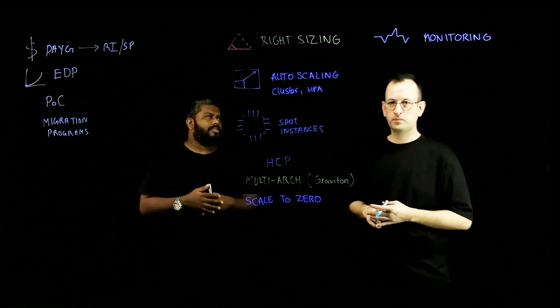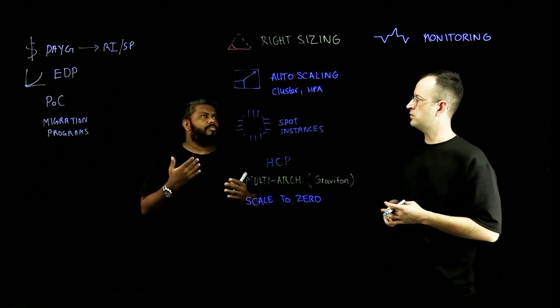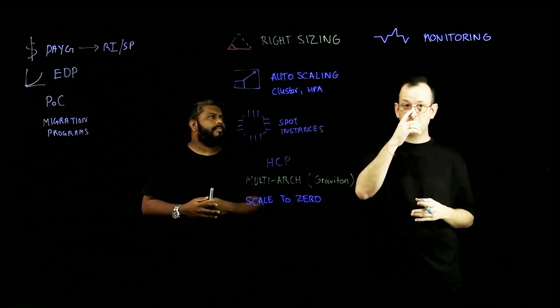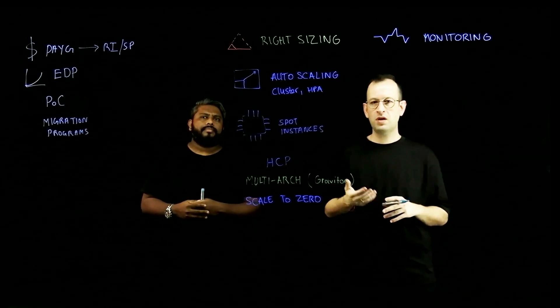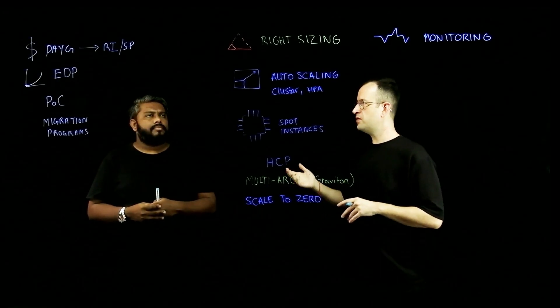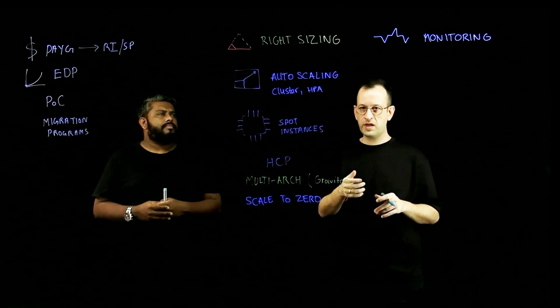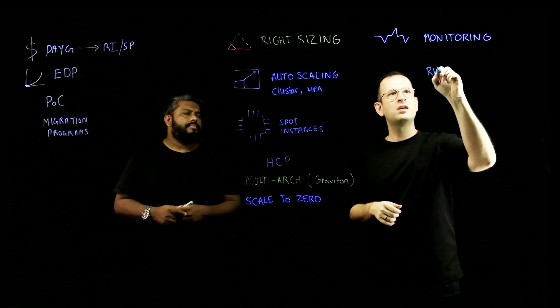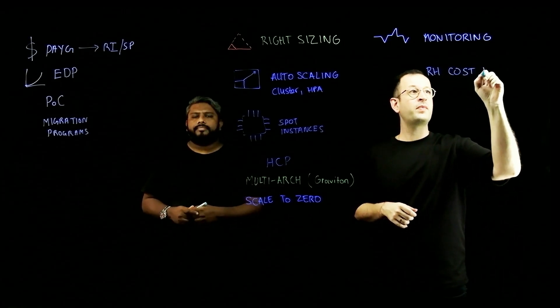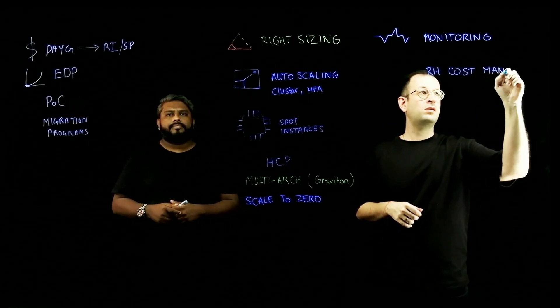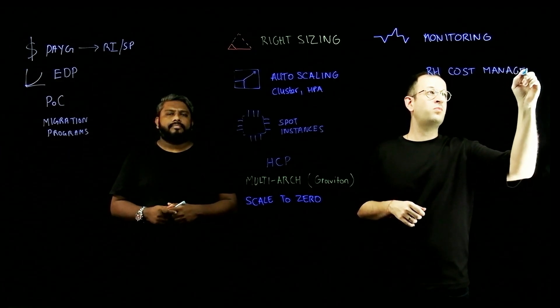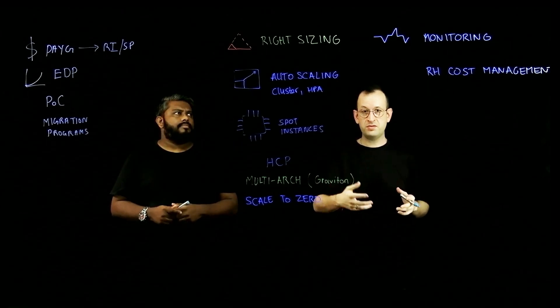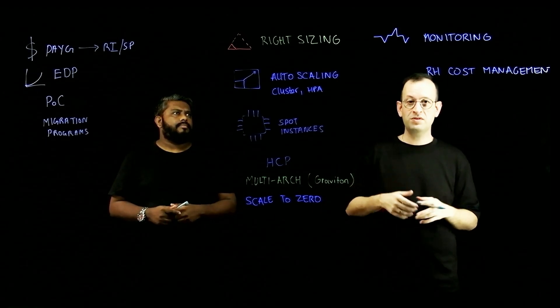So, Will, can you take us through some of those mechanisms we have to monitor and manage costs? Definitely. So to know what you need to optimize and to track how you are trending, you need to have tools to do that. And the first one I recommend is using the Red Hat Cost Management Service. So the Red Hat Cost Management Service is integrated into your ROSA console and it comes with essentially a cost breakdown per project, per cluster, meaning per application, you can see how much you're consuming.